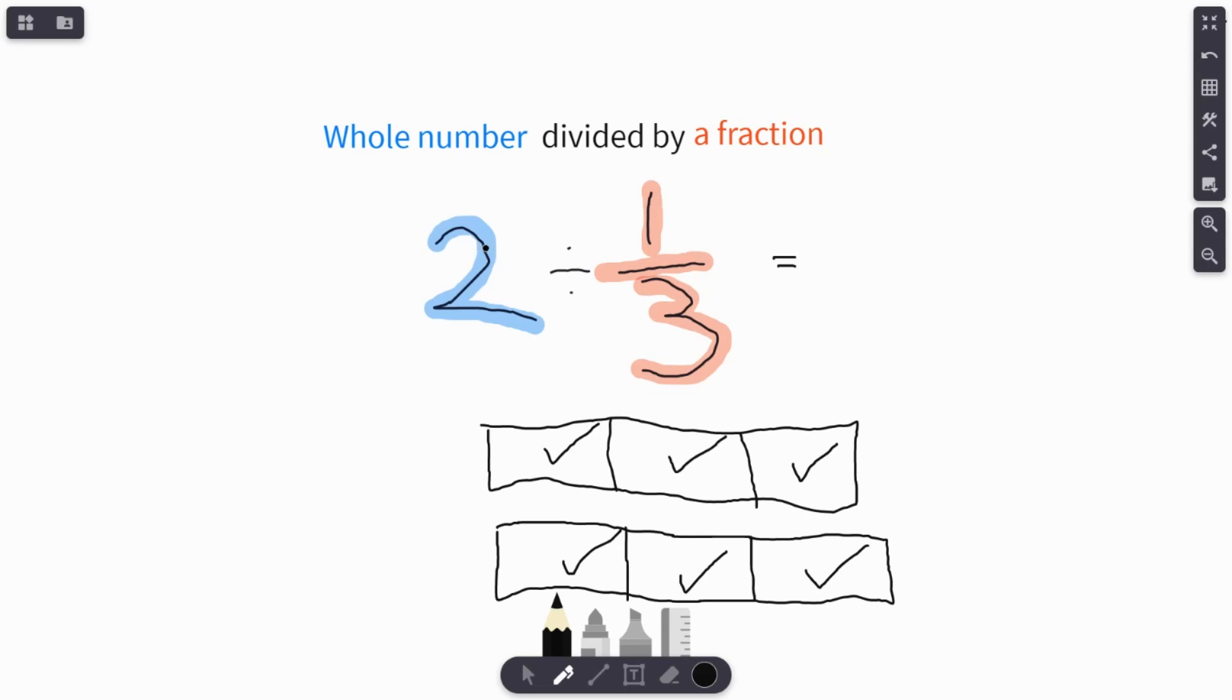So if I take two, it's basically like if I had two candy bars and I broke each candy bar into thirds, how many candy bar pieces do I have? I would have six pieces. And that is our answer to this problem. So we just divided a whole number by a fraction.